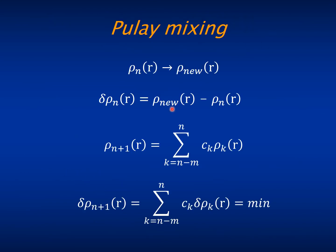Another way of facilitating the convergence of this self-consistency cycle is to use a more sophisticated mixing scheme. What we typically use is the so-called Pulay mixing.